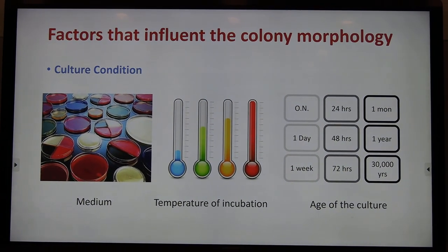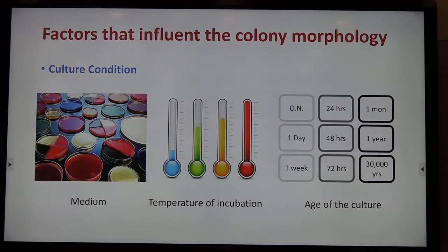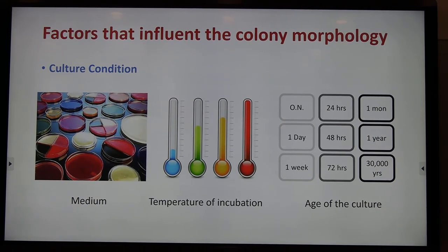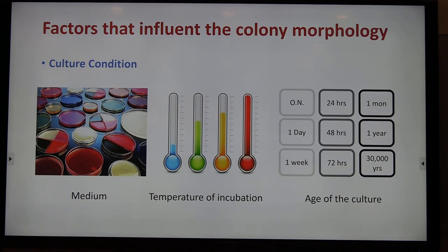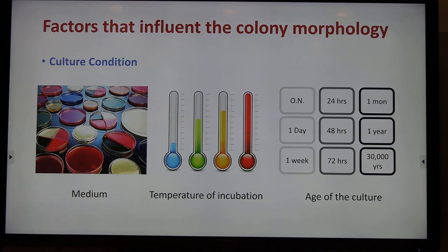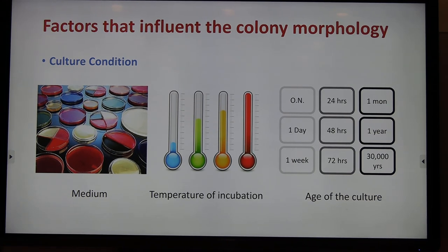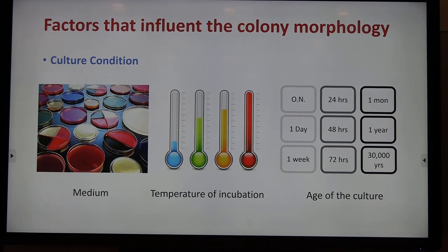For example, you need to write down the species name, the medium that you used, and the temperature and age of your culture. Some bacteria — especially biofilm-forming bacteria such as Bacillus or Pseudomonas — also have colony morphology that depends on the agar concentration. This is very important information if you are trying to describe biofilm-forming species.